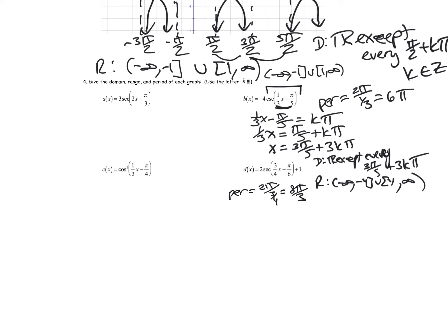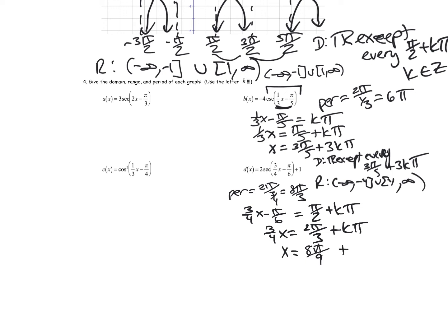For the domain, there is a transformation. I set it equal to where secant is normally undefined — pi over two plus k pi — and solve for x. Three fourths x equals pi over six plus pi over two, which gives four pi over six or two pi over three plus k pi. Multiplying by four thirds, I get eight pi over nine plus four k pi over three, or eight pi over nine plus four thirds k pi.